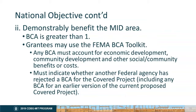The second requirement of a covered project is to demonstrably benefit the most impacted and distressed area. The easiest way to do this is to have a benefit-cost analysis greater than one, which you can perform through the FEMA BCA toolkit. However, any benefit-cost analysis must also account for economic development, community development, or other social community benefits or costs, since HUD still requires those co-benefits. You must also indicate whether another federal agency has previously rejected a BCA for this covered project.